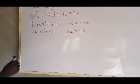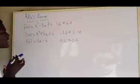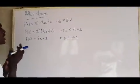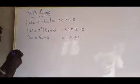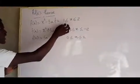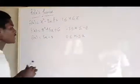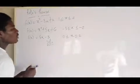Under Rolle's Theorem, like I mentioned in the last class, the function has to be continuous on the closed interval, differentiable on the open interval, and your f(a) must be equal to your f(b).